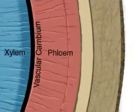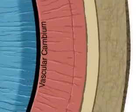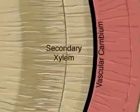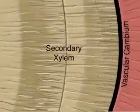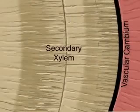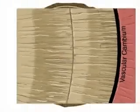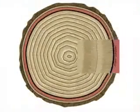As cambium cells divide, differentiating cells on the interior side become secondary xylem, and those on the exterior become secondary phloem. Girth increases as secondary xylem accumulates, and the old phloem cells are crushed as the cambium moves outwards.